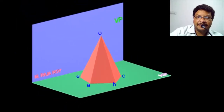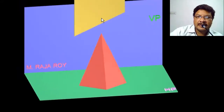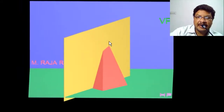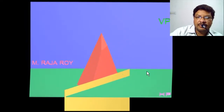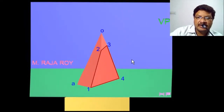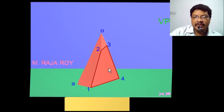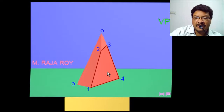You have to send the section plane in the perpendicular direction only. This portion between the observer and the section plane has been removed — this is the section obtained. In the front view, you are not getting the true shape because the section plane is inclined to VP. If the section plane were parallel to VP, you would get the true shape in the front view. To get the true shape, you have to see the section in the perpendicular direction of the section, which means you have to take an auxiliary plane.